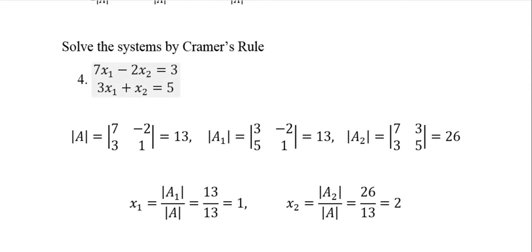Let's look at this first example. Here, the determinant of A would be 7, 3, negative 2, and 1. We just get 13.